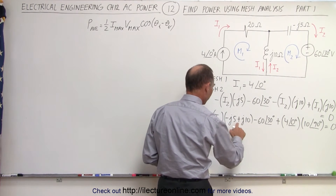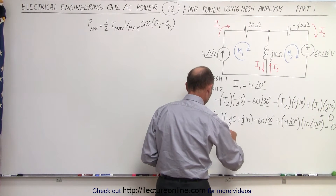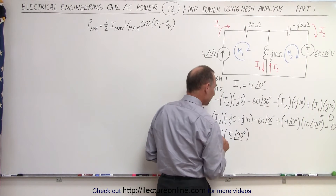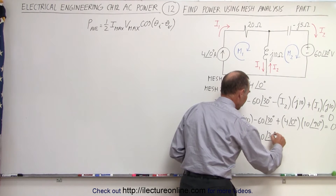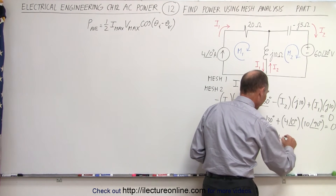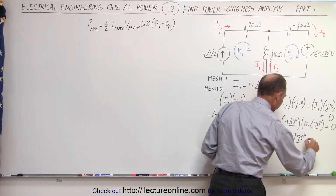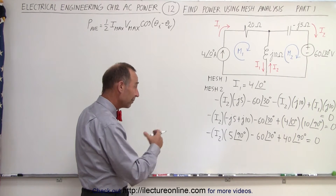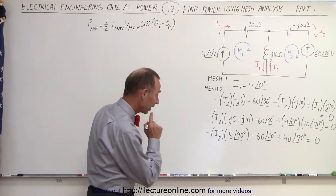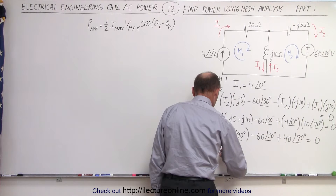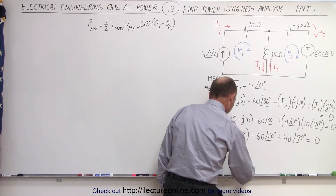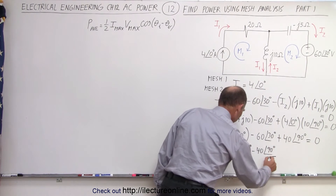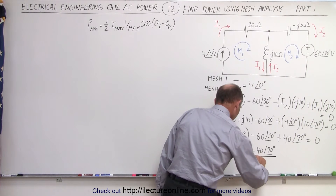We probably want to change everything to magnitude and phase angle format. First we combine the j terms: minus j5 plus j10 gives plus j5, so minus I2 times plus j5, which is 5 at a phase angle of 90 degrees. Then: minus 60 at 30 degrees, and multiplying I1 times X_L gives plus 4 times 10 which is 40 at 90 degrees, all equal to zero. Moving terms to the other side: minus I2 equals positive 60 at 30 degrees minus 40 at 90 degrees, all divided by 5 at 90 degrees.